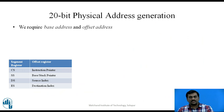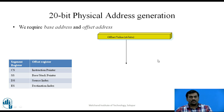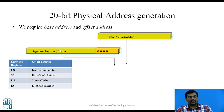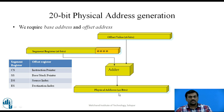How is the 20-bit physical address generated in the 8086? It requires a base address and an offset address. One input is the offset value, and the second input is the segment register contents, which are 16 bits. These contents are shifted to the left by 4 bits to generate a 20-bit number. They are then fed to an adder, which adds them to give the 20-bit physical address. The segment register can be CS, SS, DS, or ES. The offset value is obtained from offset registers: for Code Segment the offset register is the Instruction Pointer; for Stack Segment it is the Base Pointer and Stack Pointer; for Data Segment it is the Source Index; and for Extra Segment it is the Destination Index.